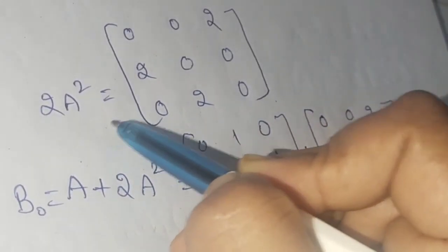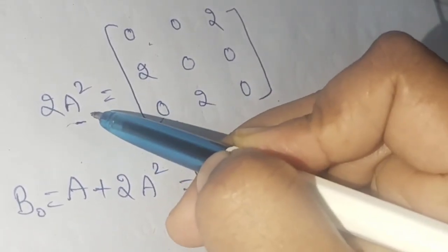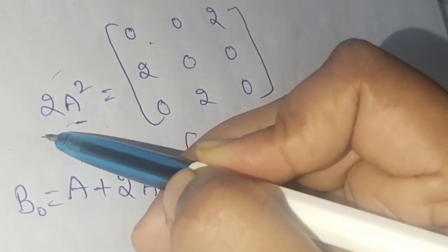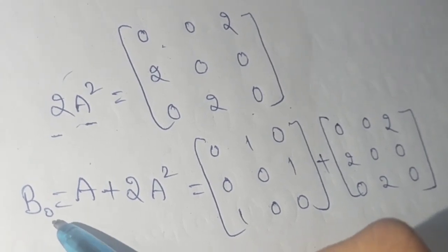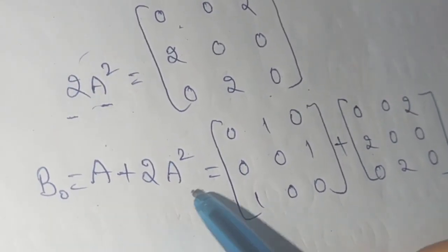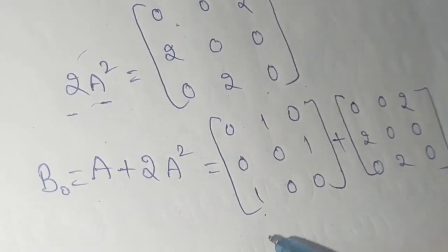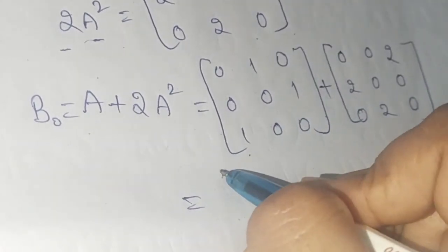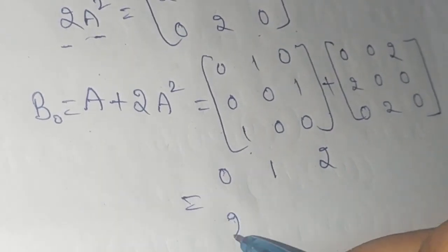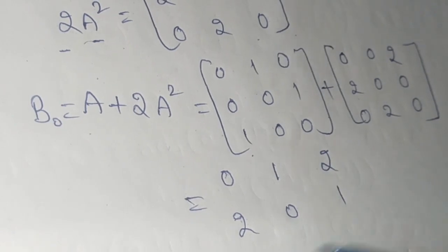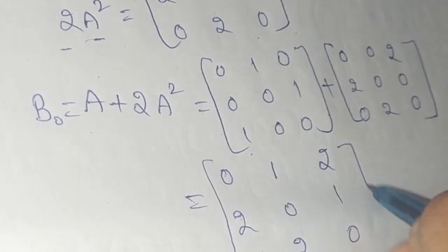The matrix 2A² = [0,0,2; 2,0,0; 0,2,0]. Adding A + 2A² gives B0 = [0,1,2; 2,0,1; 1,2,0].